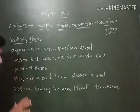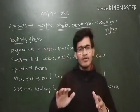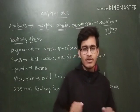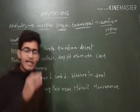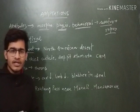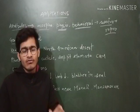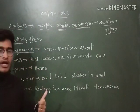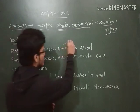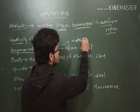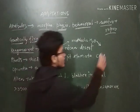Now let's talk about some examples of adaptations. The very first and most fascinating example is the kangaroo rat in the North American desert. In that desert, there is a lack of water, so the kangaroo rat used to fulfill its requirement of water from metabolic water — specifically from the oxidation of fat.